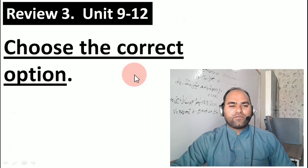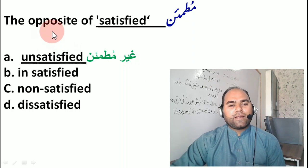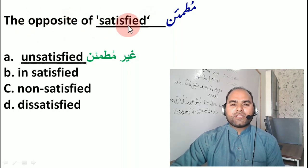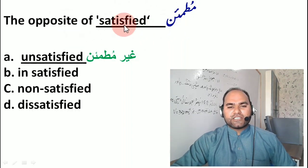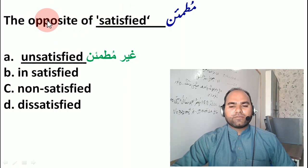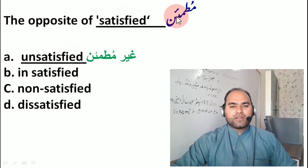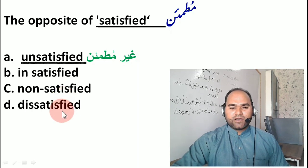Today's lecture starts now. The first MCQ is: what is the opposite of 'satisfied'? The antonym — 'satisfied' means mutmine (contented). The opposite of satisfied is 'unsatisfied'. Remember: satisfied and unsatisfied, and also 'dissatisfied'.